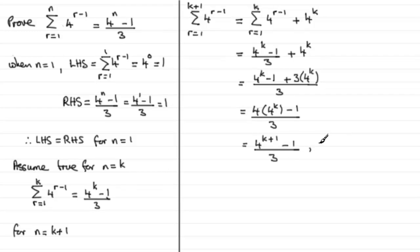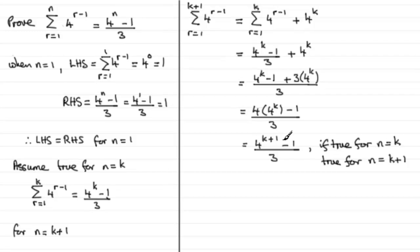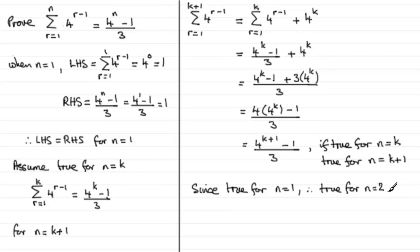So we can see that if true for n equals k, it's true for n equals k plus 1, because wherever there's an n I've replaced it with k plus 1. Now we know it's true for n equals 1, which we proved at the very first part. Therefore it must be true for n equals 2, and if true for n equals 2 it must be true for n equals 3 and 4 and so on. In other words, it's therefore true for all positive integer values — n is a member of the set of positive integers.